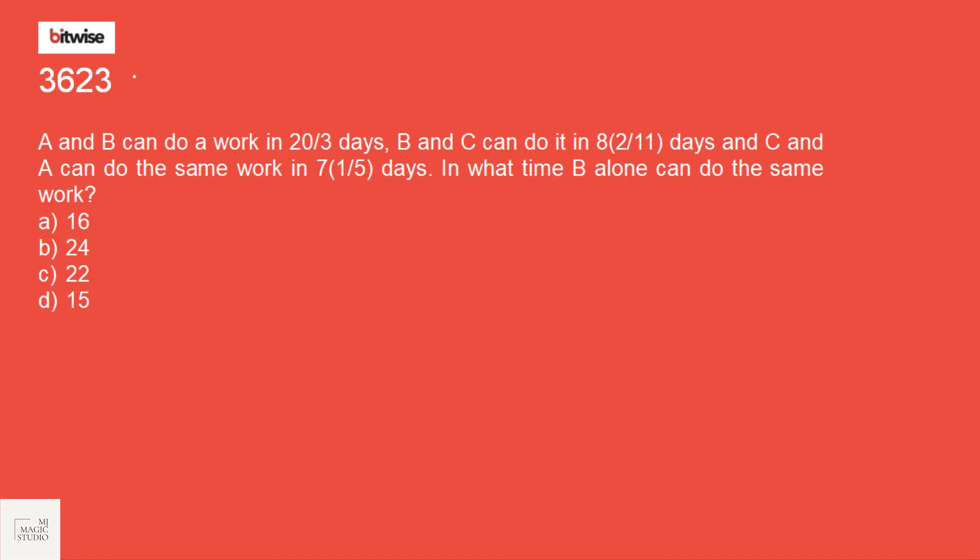Let's take up one more question from time and work and rule 8 is the key. A and B can work in 20 by 3 days or can complete a work in 20 by 3 days. If A and B are working, they can complete it in 20 by 3 days. If B and C are working, they can do it in 8 2 by 11 that is 90 by 11 days. And if C and A are working together, they would complete the work in 7 1 by 5, 36 by 5 days. In what time B alone can do the same work?